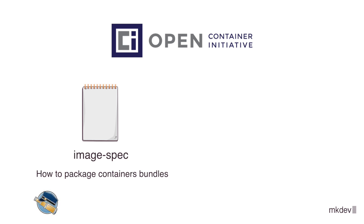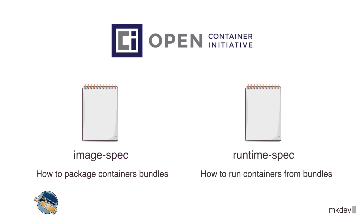We've then examined runtime spec and container bundles. Container images are always unpacked into container bundles, which consist of a root file system and a runtime spec config file. To get the bundle, we've used UMOCI, a tool that allowed us to take a container image and unpack it into a container bundle.